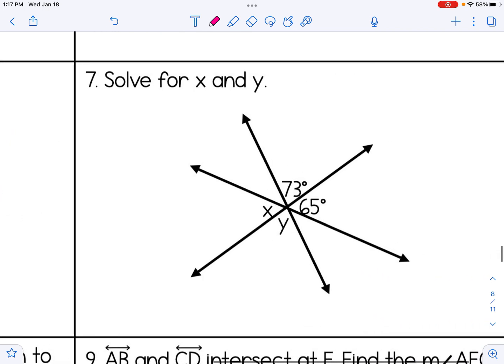Number seven, similar idea. X and 65 are across from each other, therefore they're congruent. 73 and Y are also congruent to each other.